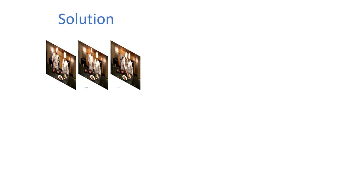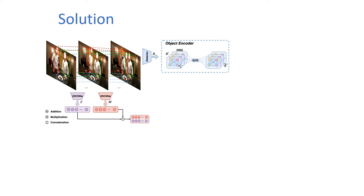Given a video, keyframes are extracted uniformly at first. The frame, motion, and object features were extracted by pre-trained models.